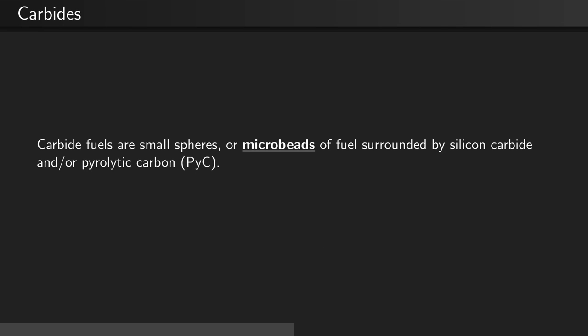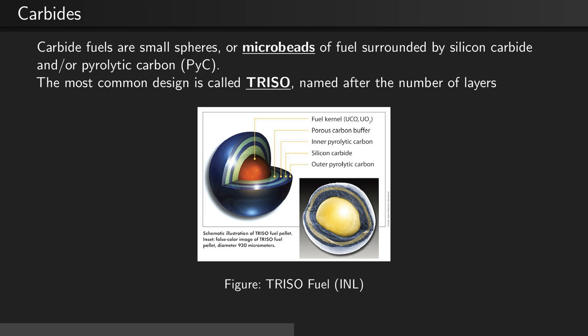Carbide fuels are small spheres or microbeads of fuel surrounded by silicon carbide and/or pyrolytic carbon. The most common design for carbide fuels is called TRISO, named after the number of layers. There is an inner core that represents the fuel, and then surrounding that there is a graphite buffer, then a pyrolytic carbon layer, then a silicon carbide layer, and finally another protective pyrolytic carbon layer.